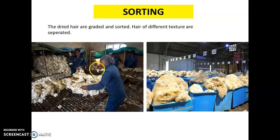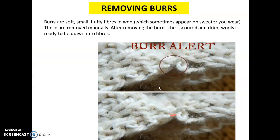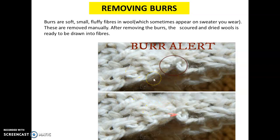Step 3 is sorting. The dried hair is graded and sorted, and hair of different textures are separated. Step 4 is removing burrs. Burrs are small, soft, fluffy fibers found in wool — you may have seen these on sweaters. Burrs are removed manually. After removing burrs, the scoured and dried wool is ready to be drawn into fibers.